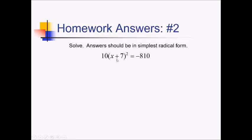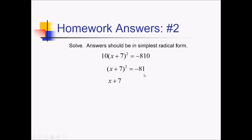For this problem, I have only squared terms and constants, so I can solve this by square rooting at some point. But first I have to get this squared term by itself. To do that, I just have to divide both sides by 10, so that will give me x plus 7 quantity squared equals negative 81. And now I can square root both sides to get rid of that square, leaving me with x plus 7 on the left side. And on the right side, since I'm square rooting an equation, I'm going to have a plus or minus square root of negative 81.